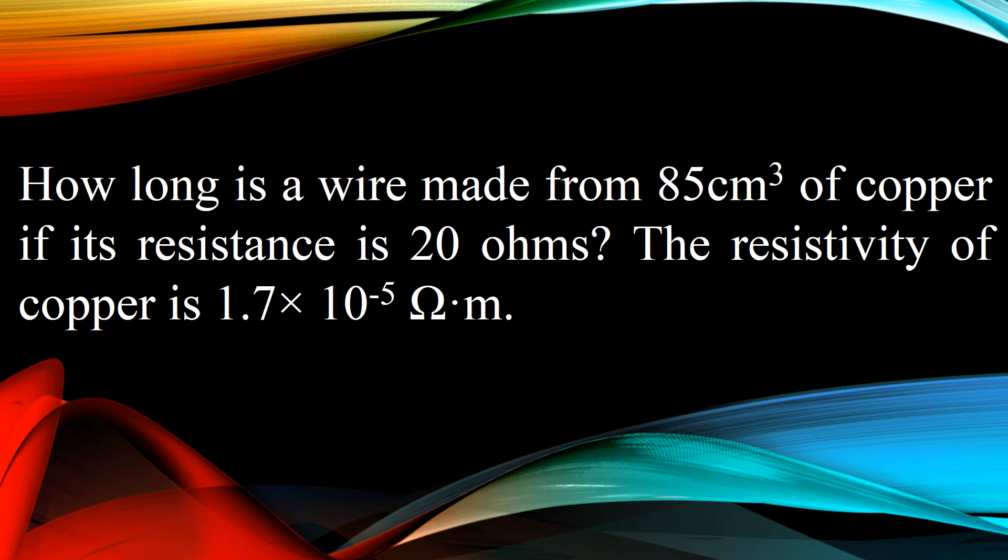How long is a wire made from 85 centimeters cubed of copper if its resistance is 20 ohms? The resistivity of copper is 1.7 times 10 to the negative 5 ohm meter.